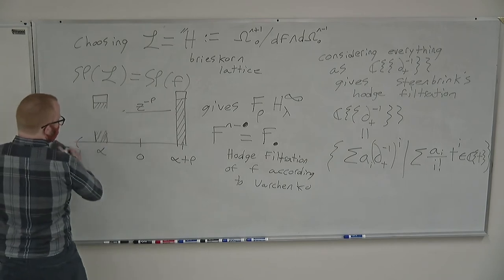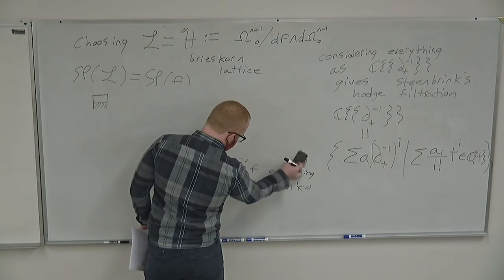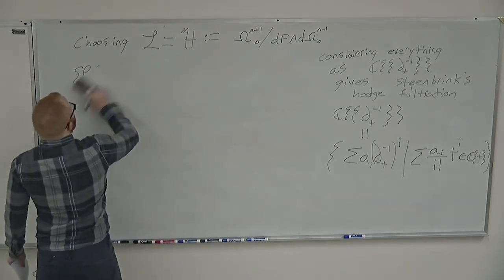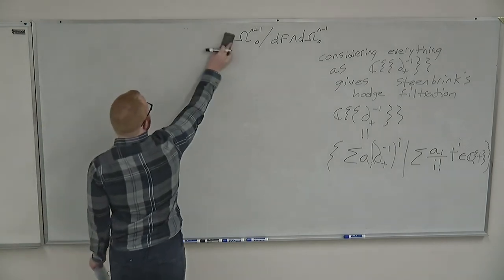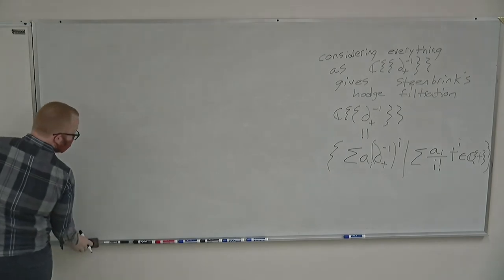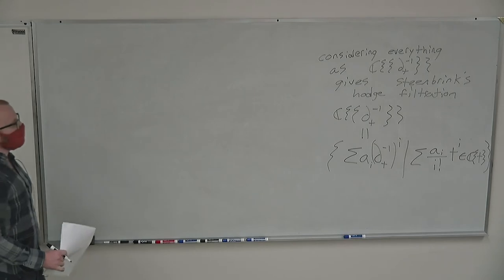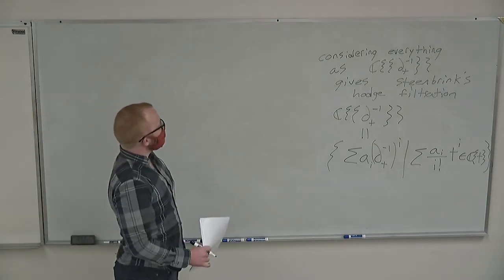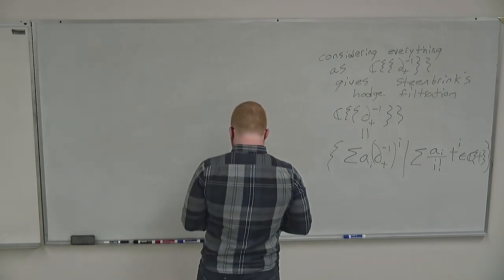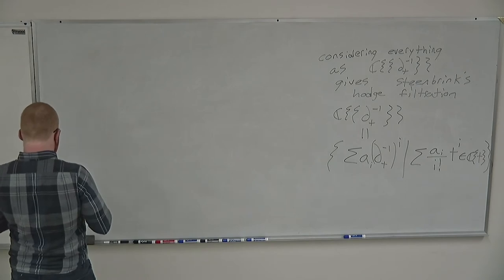This is the classical picture, and this is sort of why when we talk about the Frobenius manifold, when we try to construct this metric, we pick the Brieskorn lattice as our playground to construct the metric in. And that's why when we construct this metric, we get the spectrum appearing as residues at infinity.